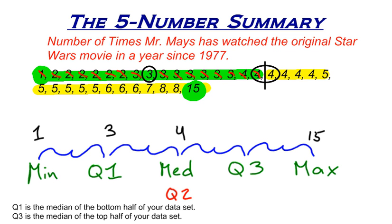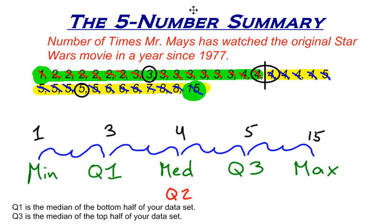Let's do the same thing for the top half. I start to mark off numbers — 4 and 15, 4 and 8, 4 and 8 again — and just continue until I get to the middle of the top half. This time it is the 5. So right there is the middle of the top half, and there is my third quartile. Now I have found my five-number summary: the minimum is 1, the first quartile is 3, the second quartile or median is 4, the third quartile is 5, and the maximum is 15. That is how you find the five-number summary.